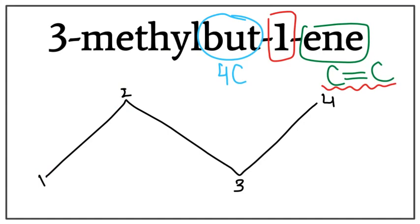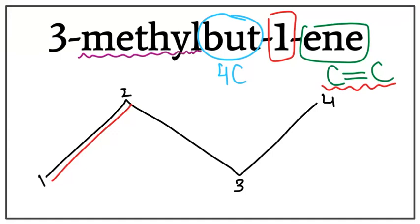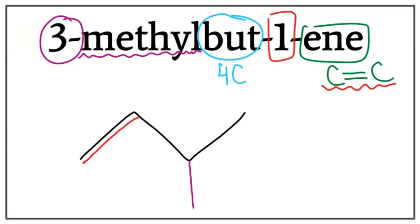Let's add the double bond between the first and the second carbon. There's also a methyl attached to the longest carbon chain, on the third carbon. So we're going to get rid of these numbers and attach the methyl on the third carbon. This is the structure for 3-methylbut-1-ene, or 3-methylbutene.